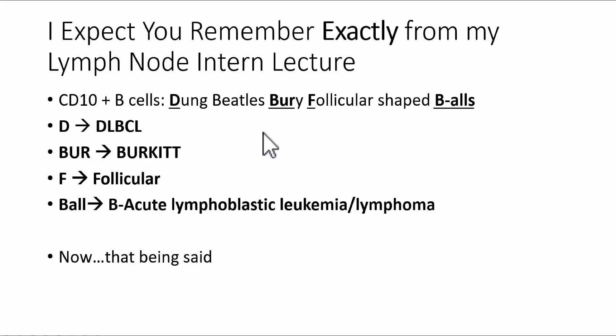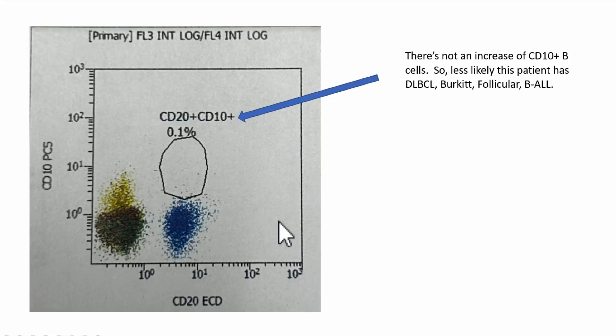And then I had another mnemonic, CD10 positive, CD5 negative neoplasms that are dung beetles and berry follicular shaped balls. So D stands for DLBCL or diffuse large B cell lymphoma. Burr stands for Burkitt. F stands for follicular, and Ball stands for B acute lymphoblastic leukemia and lymphoma.